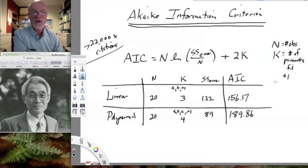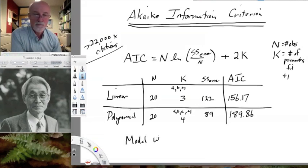So the question is, what do we do with these numbers? Well, it turns out the model with the better fit has the lower AIC value.